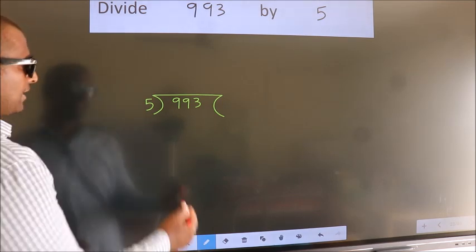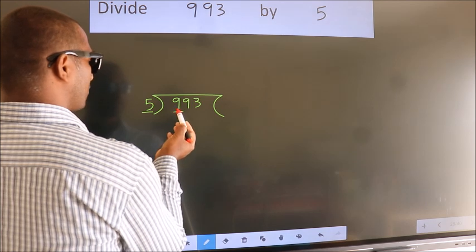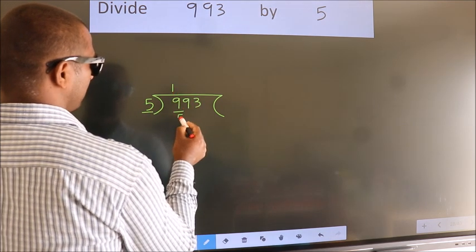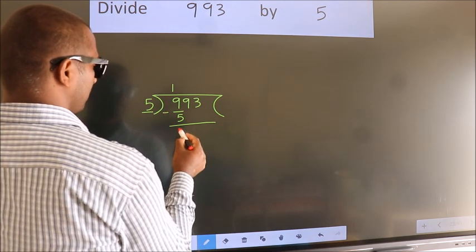Next, here we have 9, here 5. A number close to 9 in the 5 table is 5 once 5. Now we should subtract. We get 4.